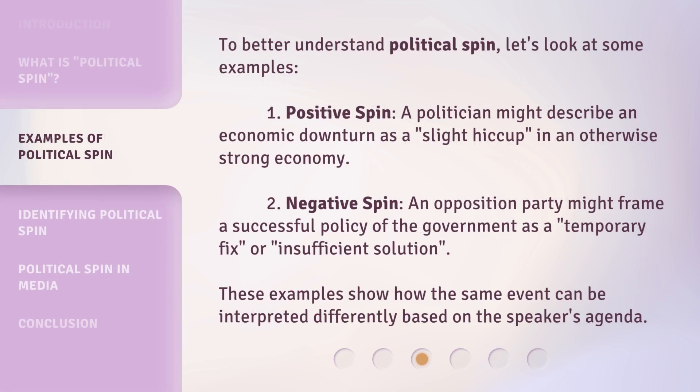To better understand political spin, let's look at some examples. First, positive spin: a politician might describe an economic downturn as a slight hiccup in an otherwise strong economy. Second, negative spin: an opposition party might frame a successful policy of the government as a temporary fix or insufficient solution. These examples show how the same event can be interpreted differently based on the speaker's agenda.